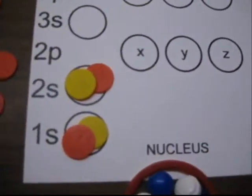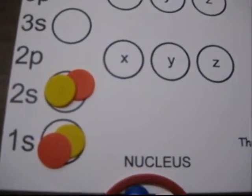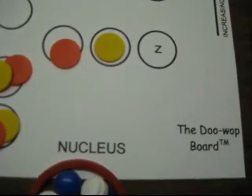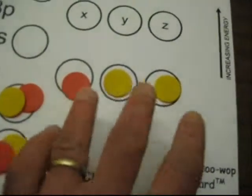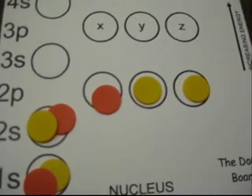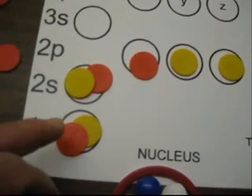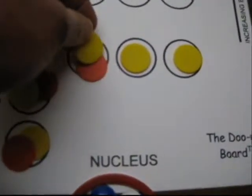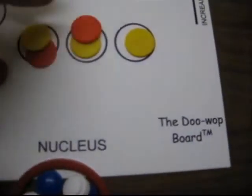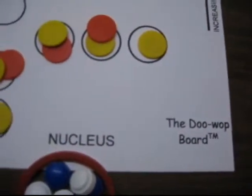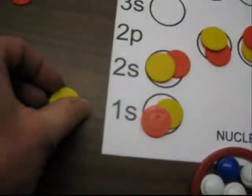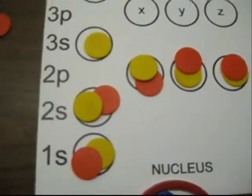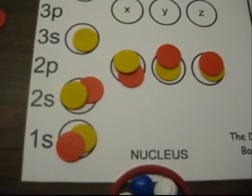Now we come to the 2p level and apply the Hund's rule — we put one in X, one in Y, and one in Z. Then we come back with a second electron in X, Y, and Z. That gives us ten electrons placed so far. We have one electron left, so we move up again to the third layer and place one electron there on the third level.